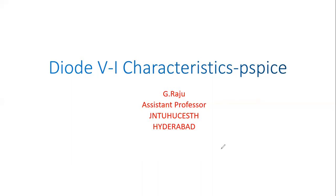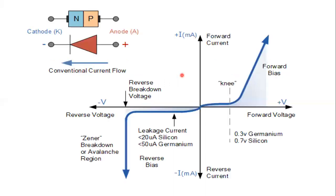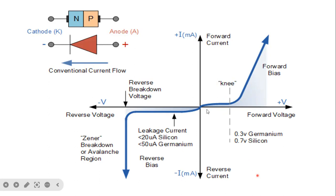Diode VI characteristics — by using PSpice. These are the characteristics of the diode: VI characteristics. The x-axis is called diode voltage, the voltage across the diode, and the y-axis is called current flowing through the diode.